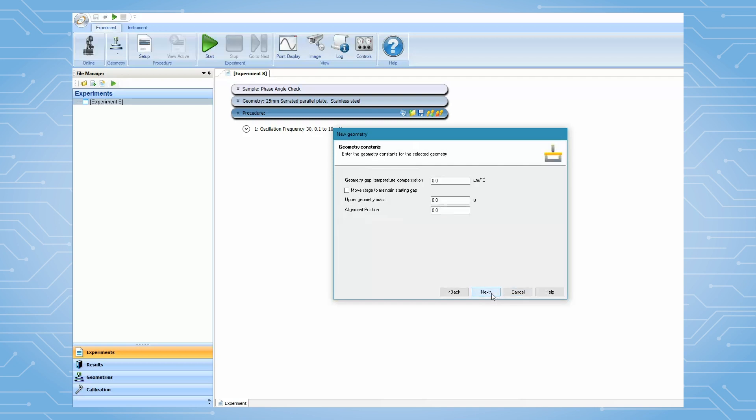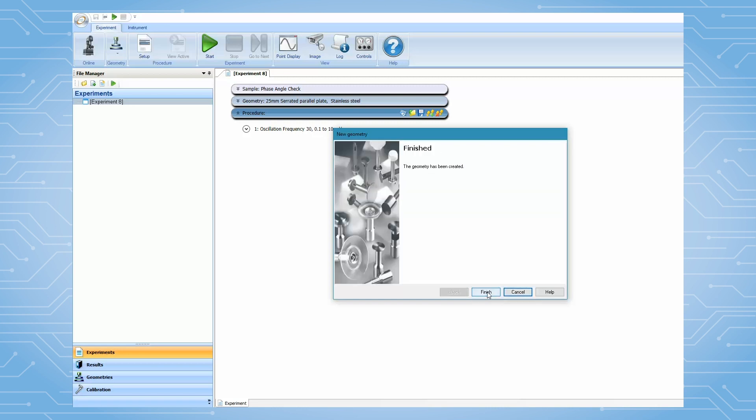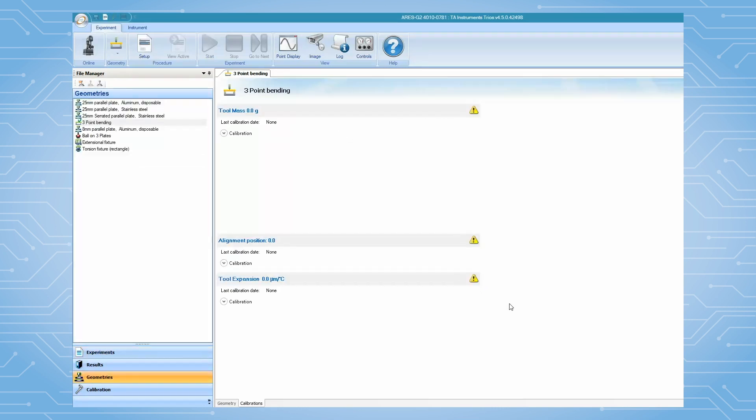Simply click on Next in the next few pages, since we will be entering sample dimensions and performing clamp calibration after the geometry file is created. At the end, click on Finish to create this geometry file.